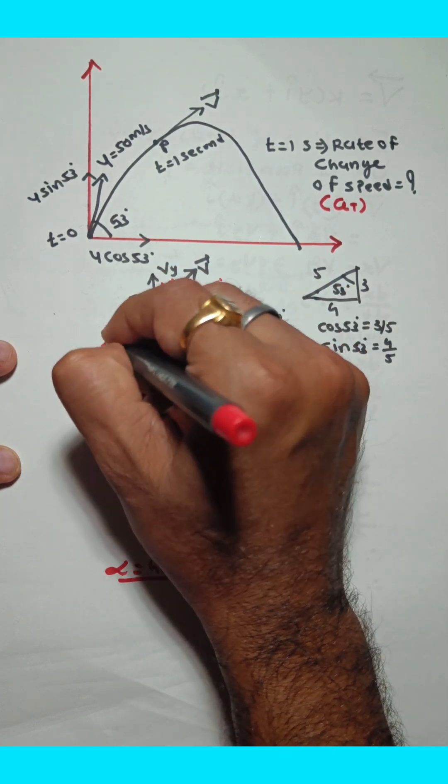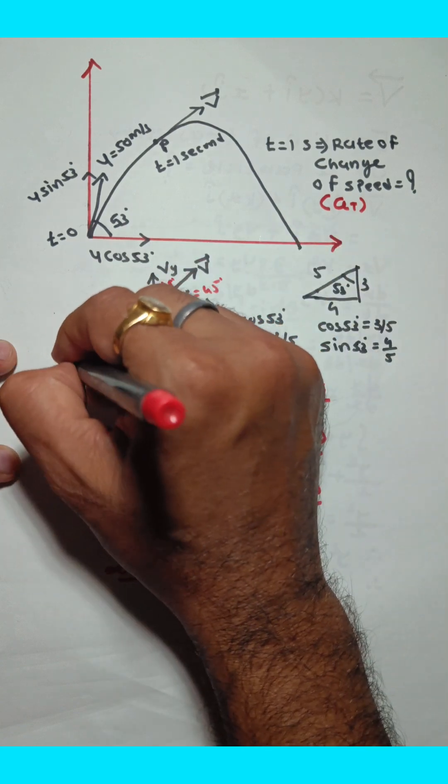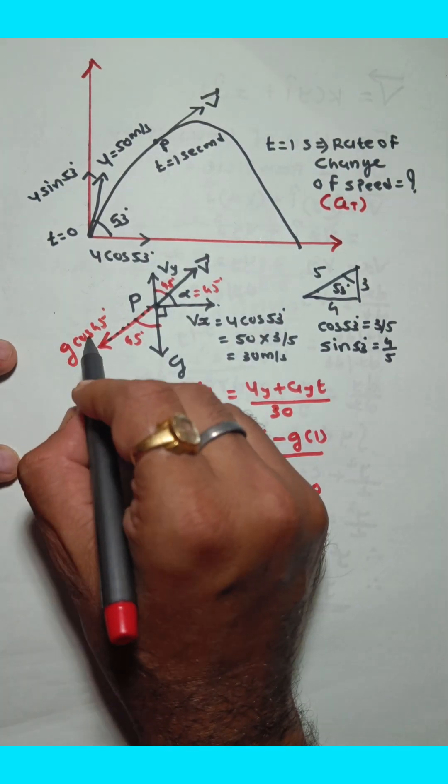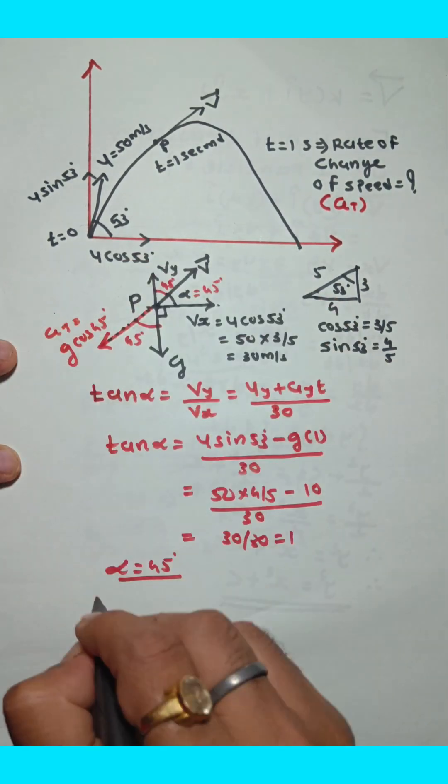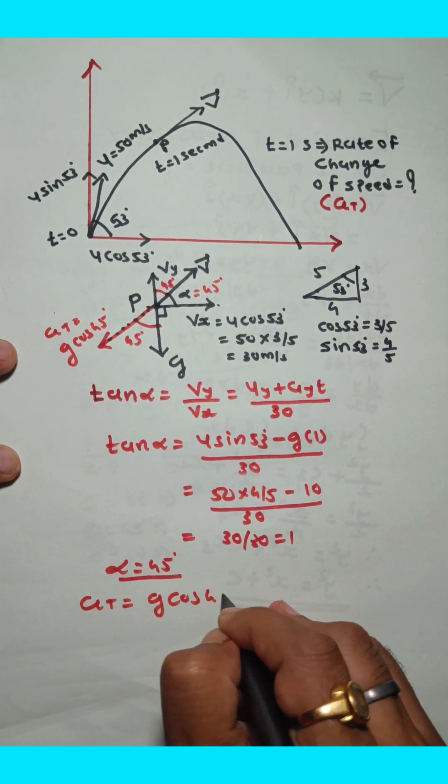Now take the component of g exactly opposite to v, which is g cos 45. This g cos 45 represents the tangential acceleration, so at equals g cos 45.